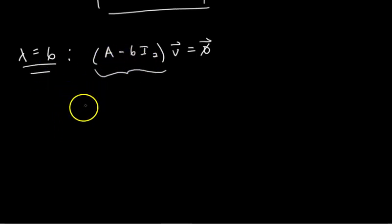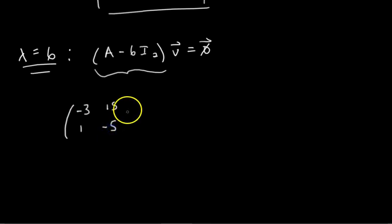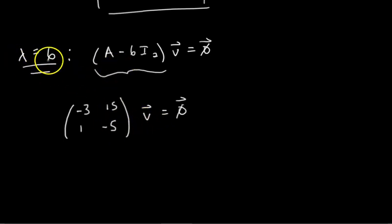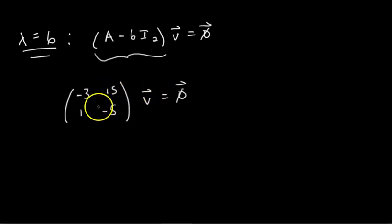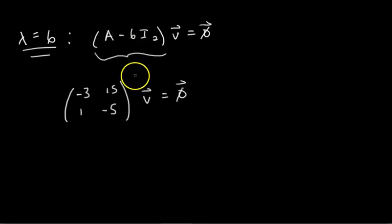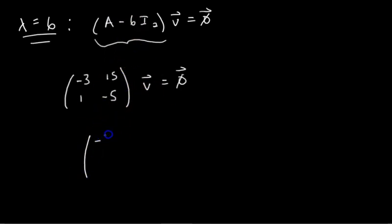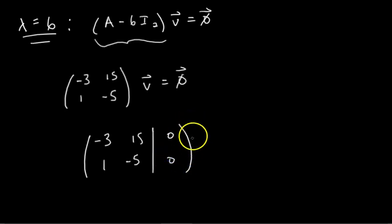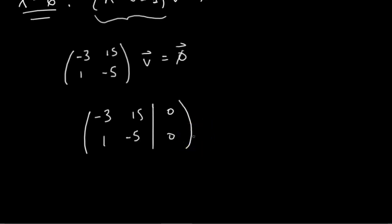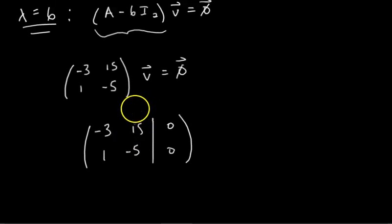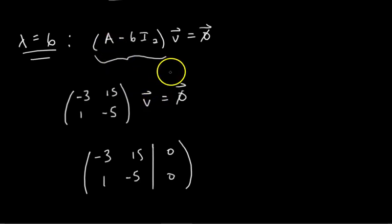For lambda equals 6, we want a basis for the 6-eigenspace, so we set up A minus 6I₂ times V equals 0. This is a homogeneous equation, so the null space of the matrix A minus 6I₂ is exactly the 6-eigenspace of A. We already found A minus 6I₂ equals [-3, 15; 1, -5]. The null space of this matrix — all vectors satisfying this equation — are all eigenvectors of A with eigenvalue 6. To find a basis for the null space, we put it in augmented form and row reduce.